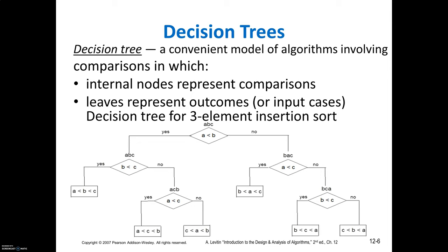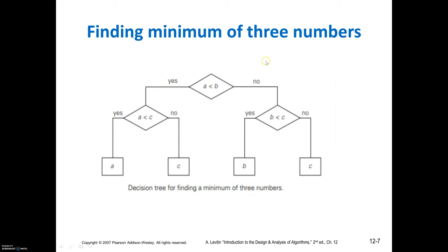In a decision tree, the internal nodes represent comparisons and the leaves represent outcomes. As an example, for a three-element insertion sort, look at the number of comparisons: one, two, three, four, five. Similarly, for finding the minimum of three numbers, the minimum number of comparisons required is three, which can be established by writing the decision tree.